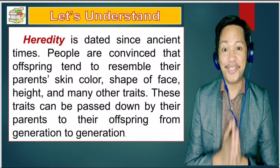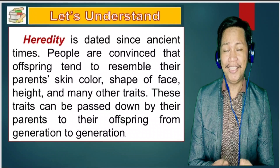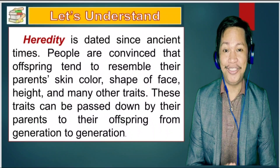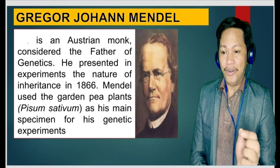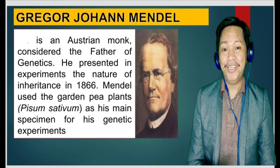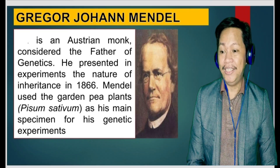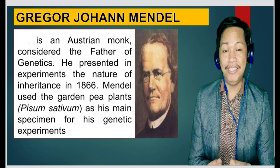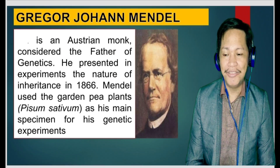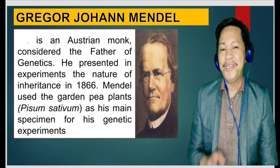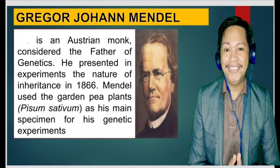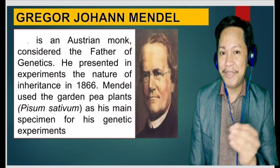Now let us discover the proponent of the lesson. Since we're talking about genetics, in science we always need to know who proposed that idea or concept. In your module, Gregor Johann Mendel is an Austrian monk considered the father of genetics. He presented experiments on the nature of inheritance in 1866. Mendel used the garden pea plant — scientific name Pisum sativum — as his main specimen.